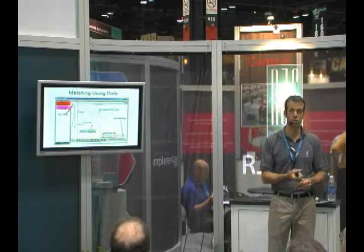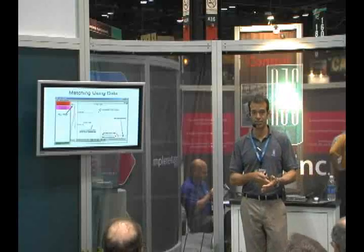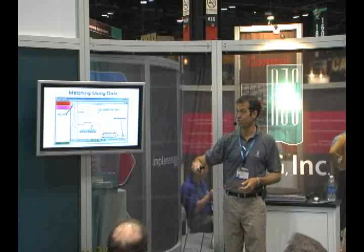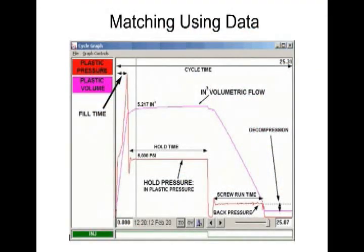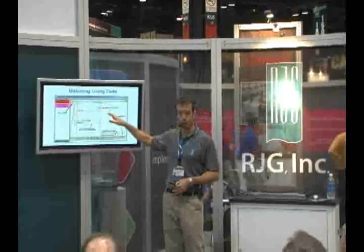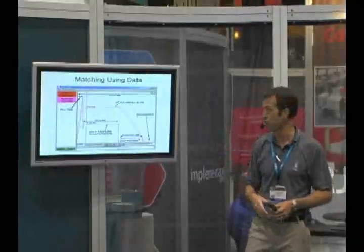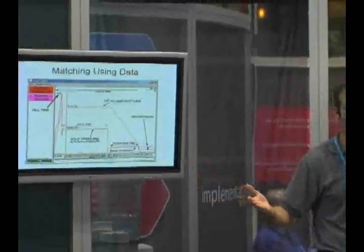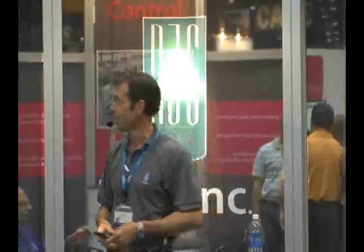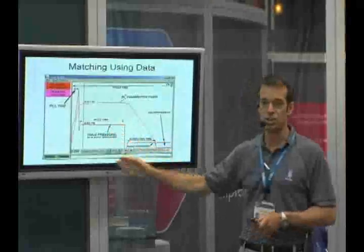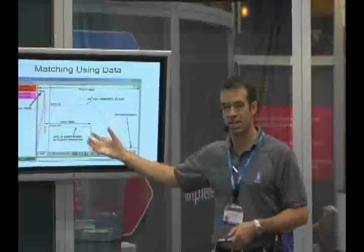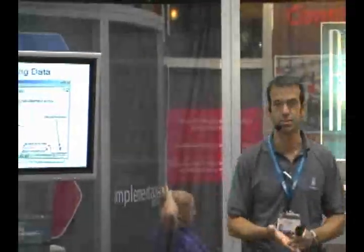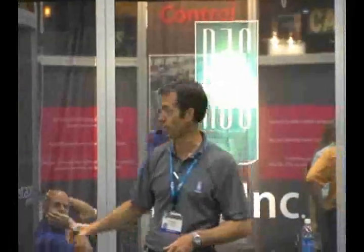If we have a data acquisition system in place, everything we're talking about is very specific to data. This is a screenshot from RJG's EDART system. In that configuration, we account for plastic pressure and volumetric flow in the setup of that software, so the display is automatically converted. We have volumetric flow as far as the linear position of our screw, and we've calculated our hold pressure — our plastic pressure — in red, already making the conversion from the intensification ratio. So the traces of this information can be used in that mold transfer, based on machine-independent information, and machine settings can be adjusted accordingly to match these profiles.